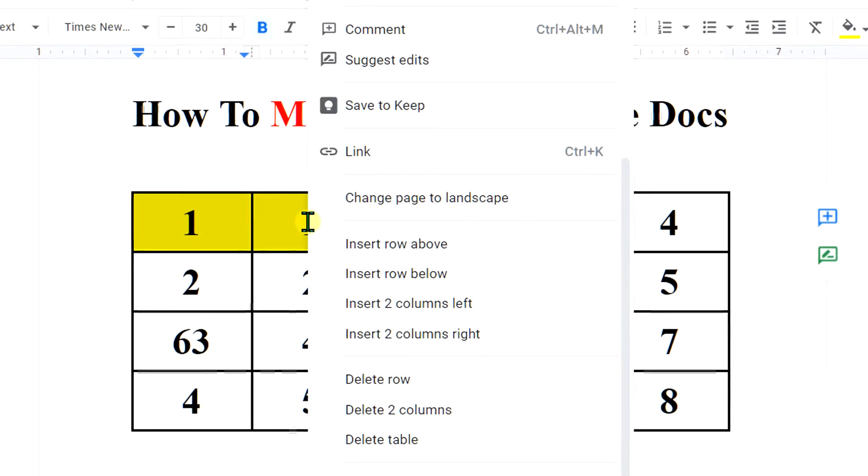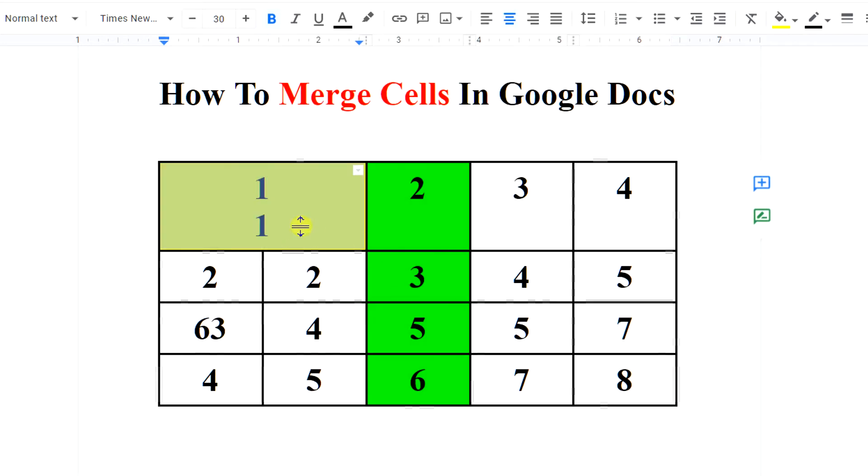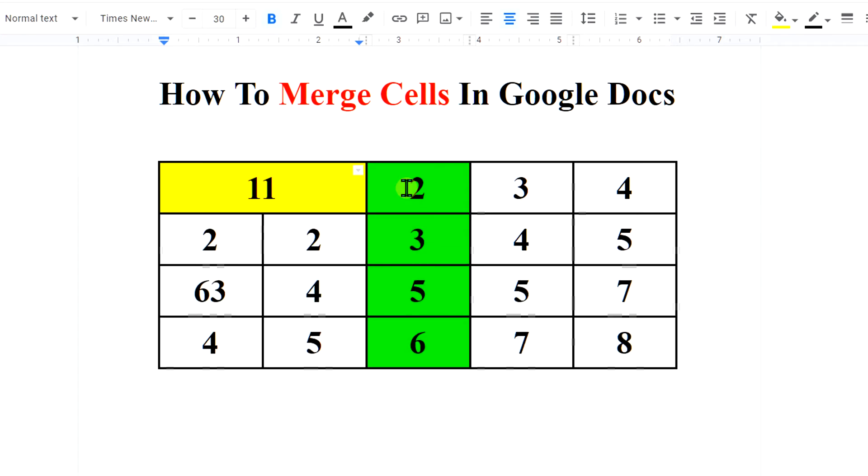After selecting the cells, right click and you will see the option merge cells. After clicking merge cells, the cells will be merged without deleting the data. Now you can arrange the data as required.